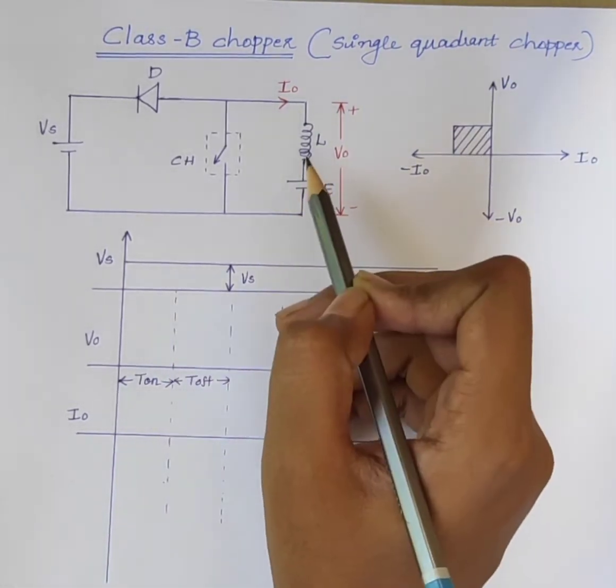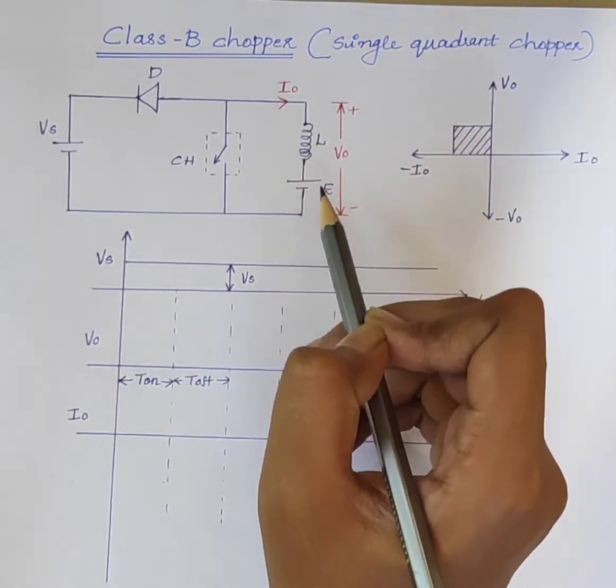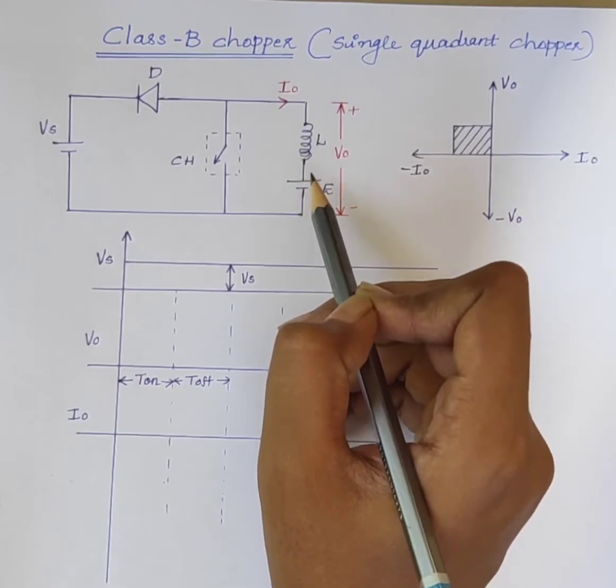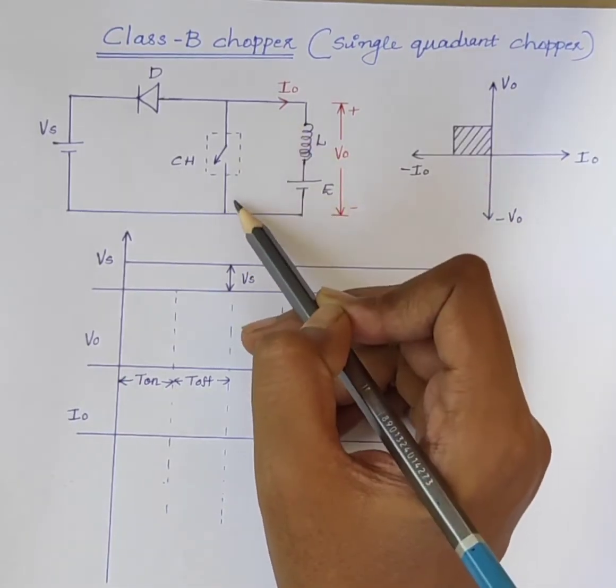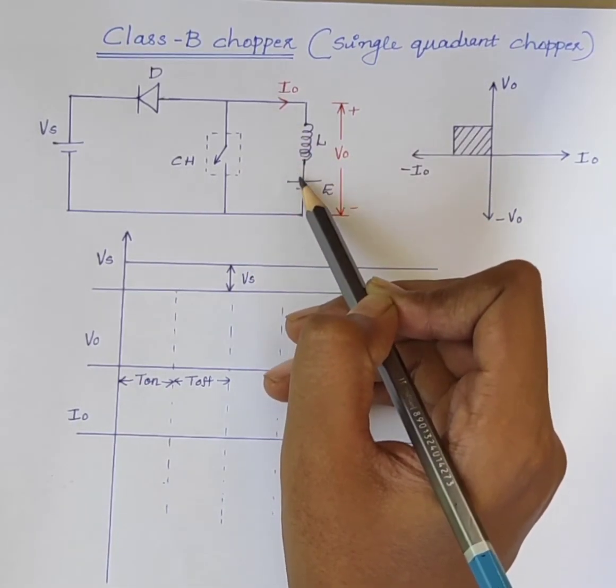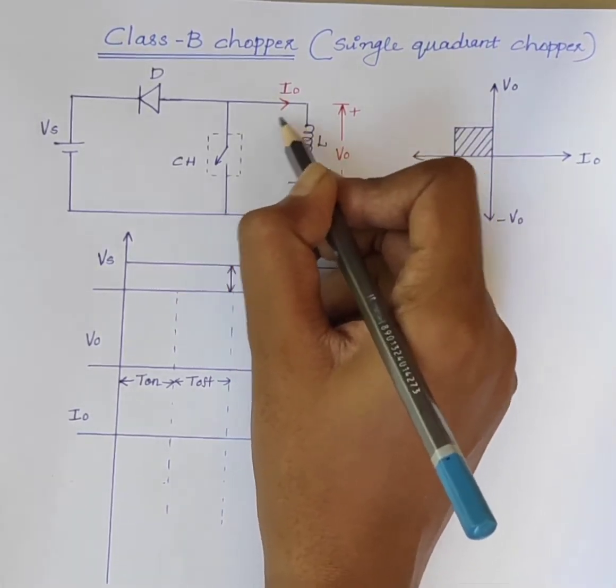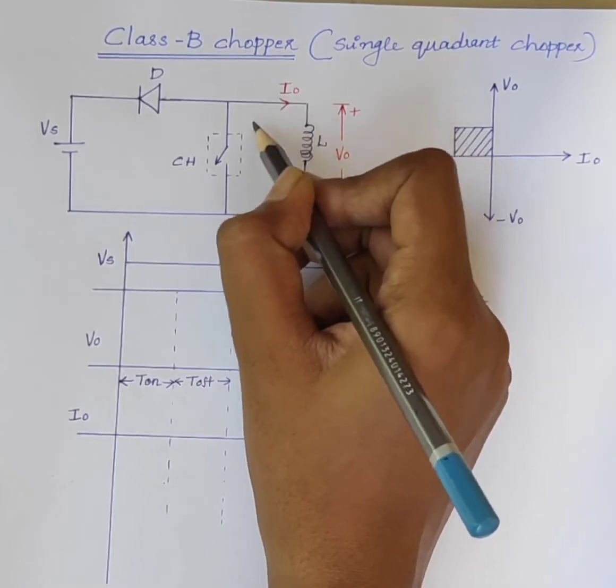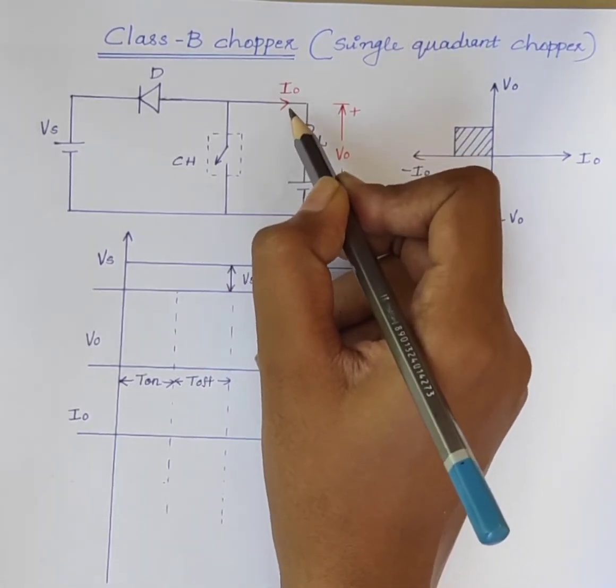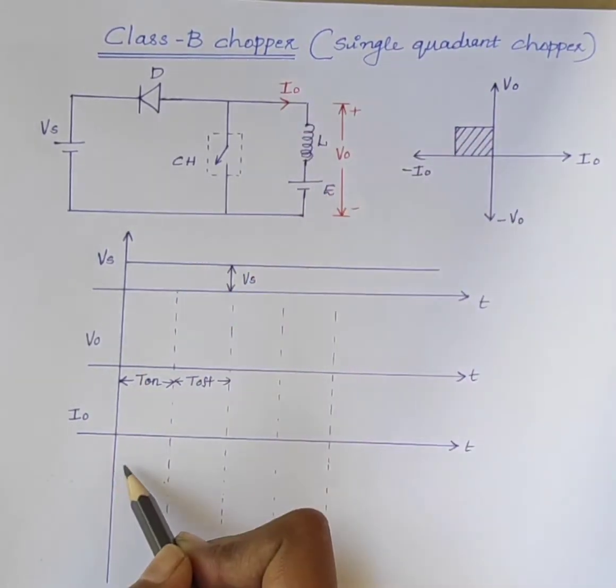But, the load voltage E drives the current through inductor and chopper. That is from positive to negative. Current flow is in the opposite direction. Therefore, the output current I0 is negative.